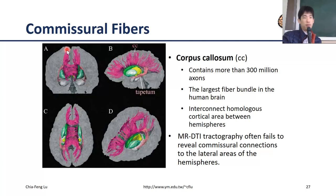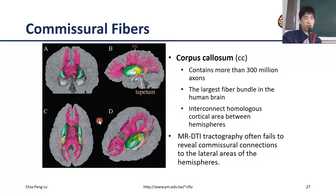If you reconstruct the fibers using tractography, you can see the extensive fiber connections through the corpus callosum. It contains more than 300 million axons — definitely the largest fiber bundle in the cerebrum. The corpus callosum is so important because it interconnects every lobe, including the frontal and occipital lobes, allowing the brain to communicate between hemispheres.